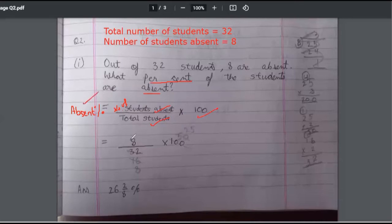Now how many students were absent? 8 out of 32. Now I just wanted to ask, why have you not cancelled 8 and 8? So it will be 1 into 25. Answer should be 25 percent. Just be careful in your calculations.